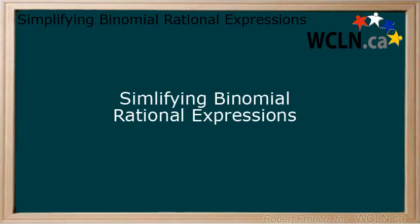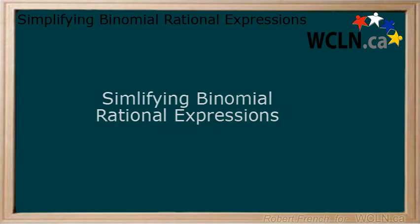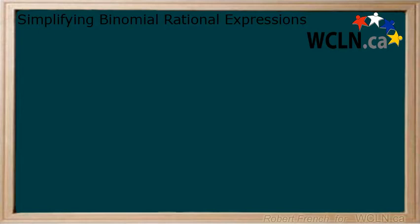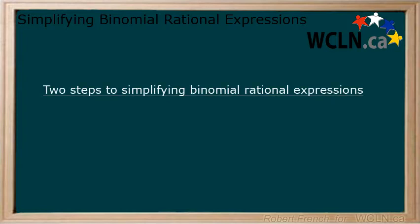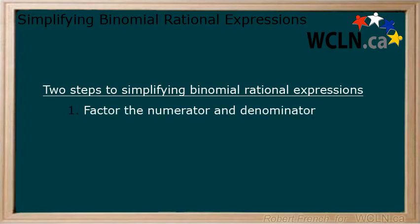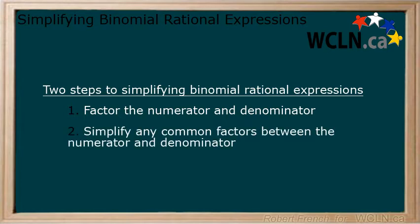In this tutorial, we will be looking at how to simplify rational expressions with a binomial in both the numerator and denominator. There are two main steps we will be using to do this. Step 1: factor both the numerator and the denominator. Step 2: simplify any common factors between the numerator and the denominator. Let's go over a couple of examples.